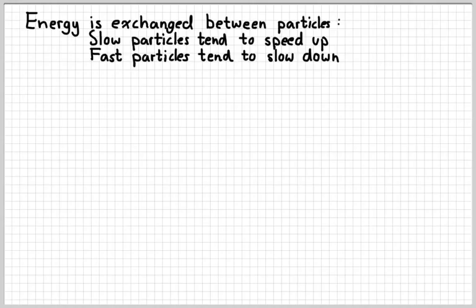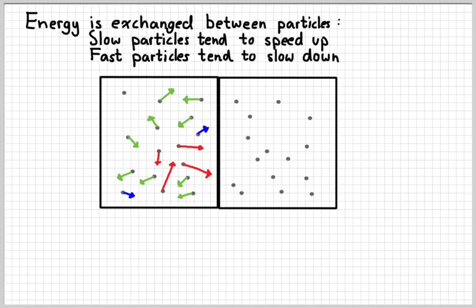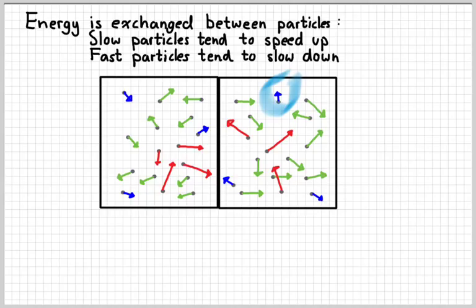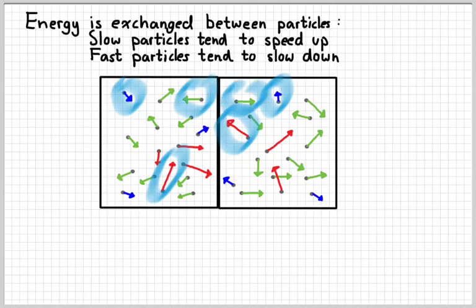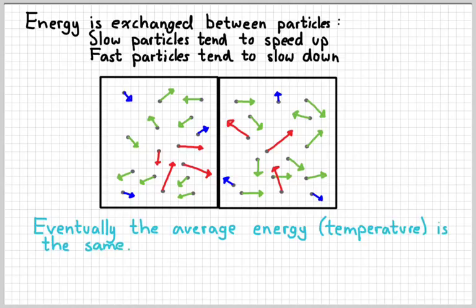So on average, they all average out. So my picture may now go to looking more like this, where we still have some cold, slow particles on the right, and some fast particles on the left. But on average, we have about the same number of hot, cold, and medium particles on both sides. Eventually, the average energy or temperature is the same throughout both substances. When that's true, we say that they are in thermal equilibrium.